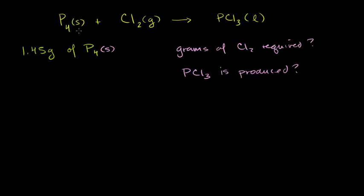We know that solid phosphorus will react with chlorine gas to spontaneously produce liquid phosphorus trichloride. We're told that we have 1.45 grams of solid molecular phosphorus, and we're asked how many grams of chlorine is required to use up all of the phosphorus that we have, and how many grams of phosphorus trichloride is going to be produced.